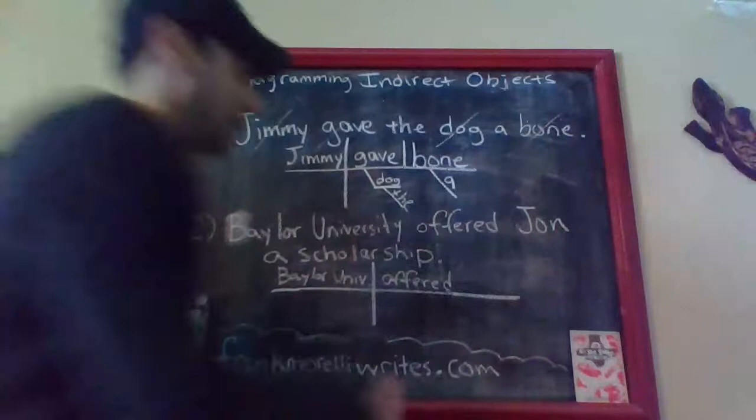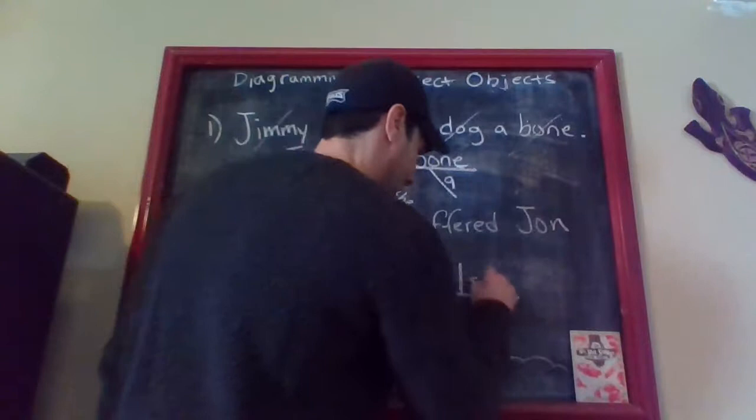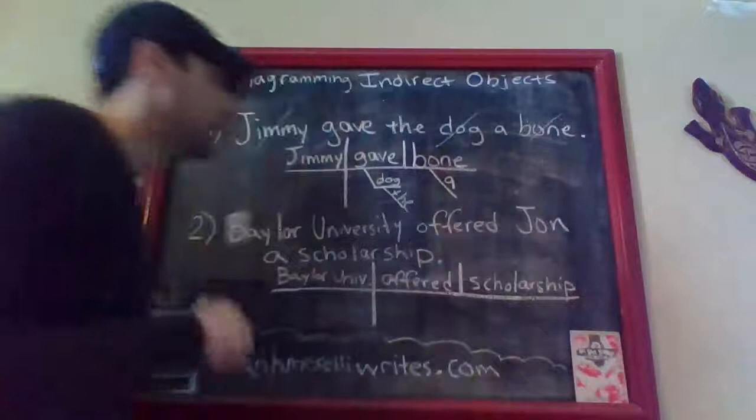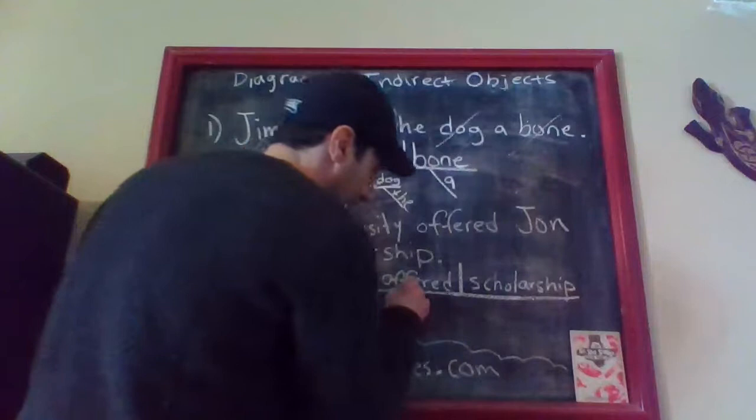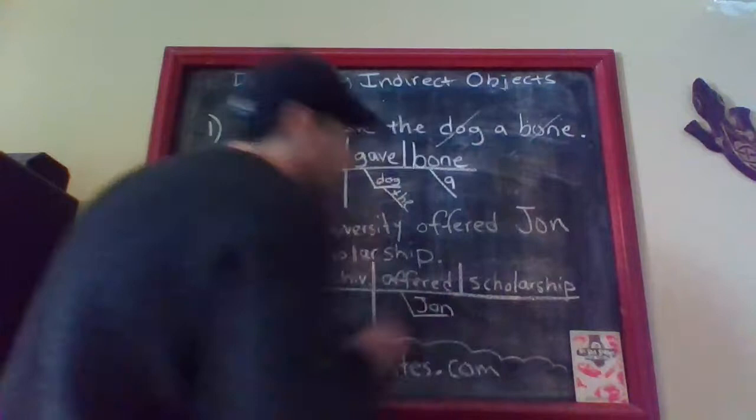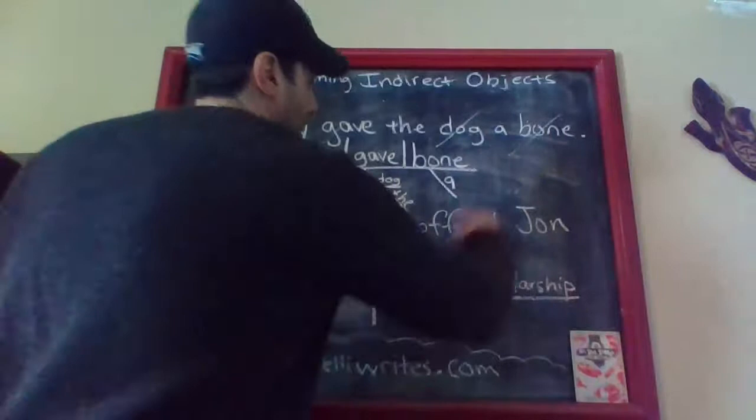They didn't offer John — they offered a scholarship. That is your direct object, so you put the word 'scholarship' on the diagram. Now check for an indirect object: Baylor University offered what? They offered a scholarship to whom? Your indirect object will be 'John' — that's the answer to 'to whom.'